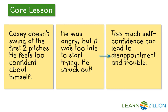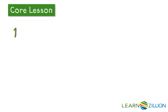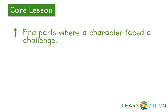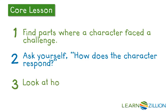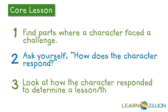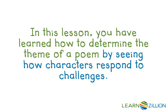This means that we've found a theme for our poem. So when you want to determine a theme in a poem, first choose a character and find parts where the character faces a challenge. Then ask yourself, how does the character respond to this challenge? Finally, you can look at how the character responded to the challenge overall in order to determine a lesson or a theme for the poem. In this lesson, you have learned how to determine the theme of a poem by seeing how characters respond to challenges.